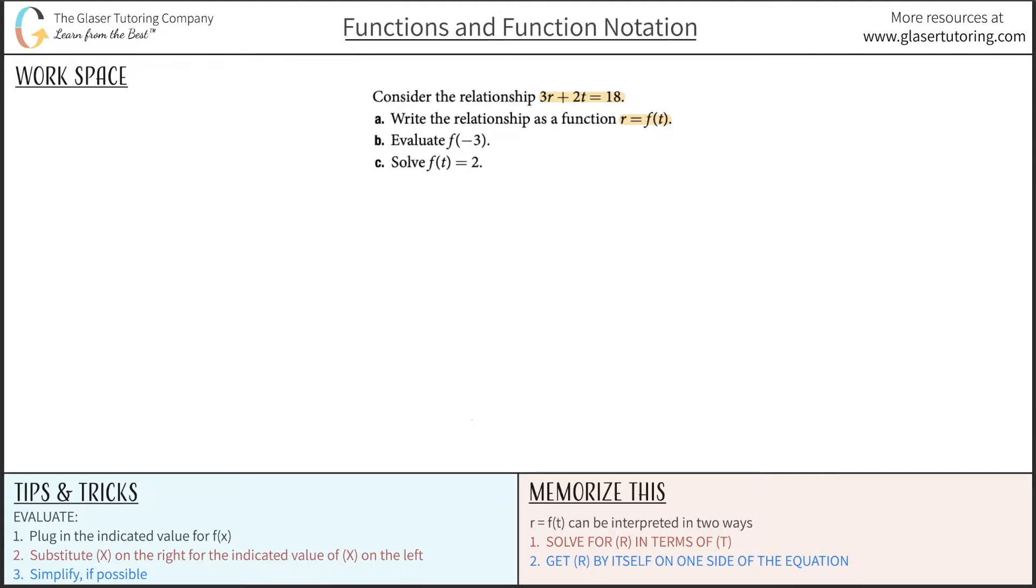So interpreting that even a little further, I have two main ways if you look under the memorize this section. When you see r is equal to f(t), you can think about this in two ways. Both will get you to the same answer, but I think one is a little more mathematically oriented, statement number one, and number two is a little more to the point.